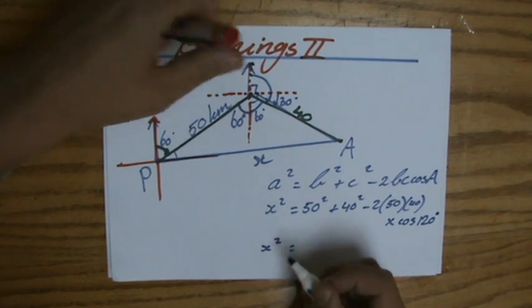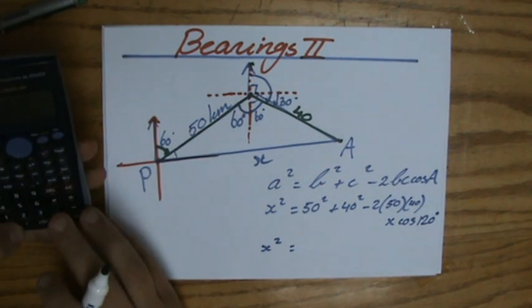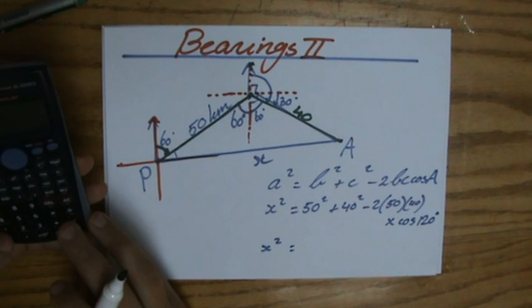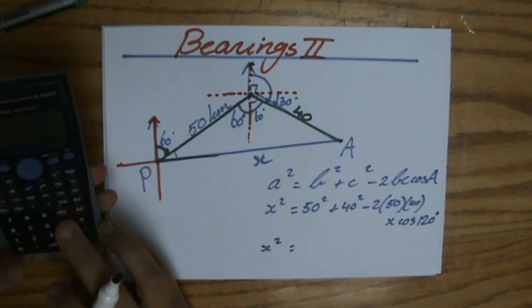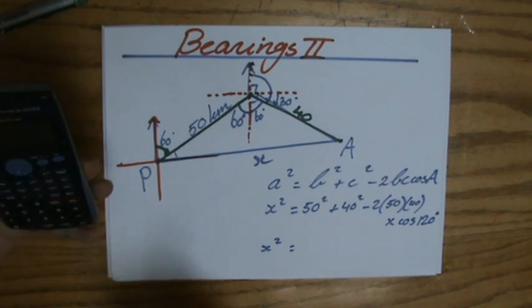Now I can plug all of that in my calculator. So 50 squared plus 40 squared minus 2 times 40 times 50 times the cosine of 120 equals,